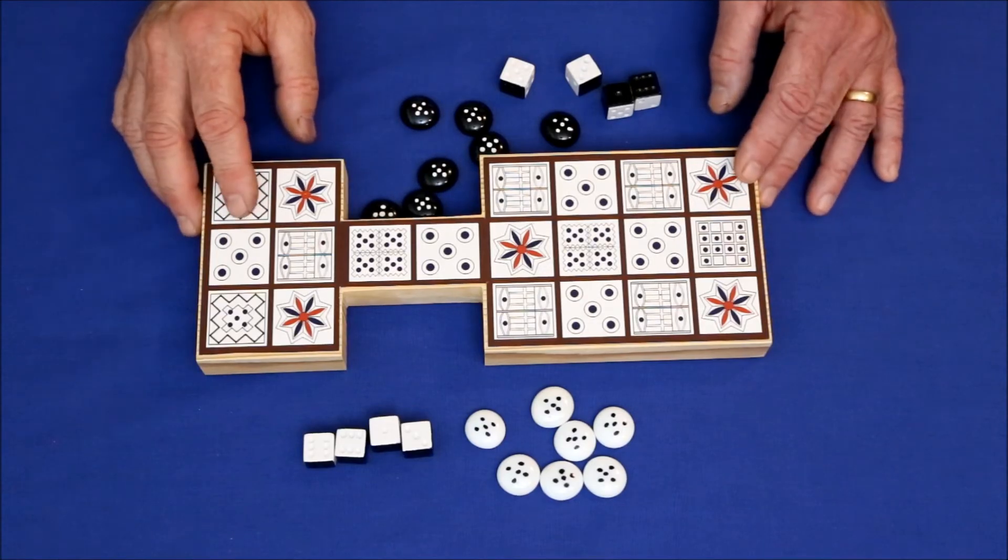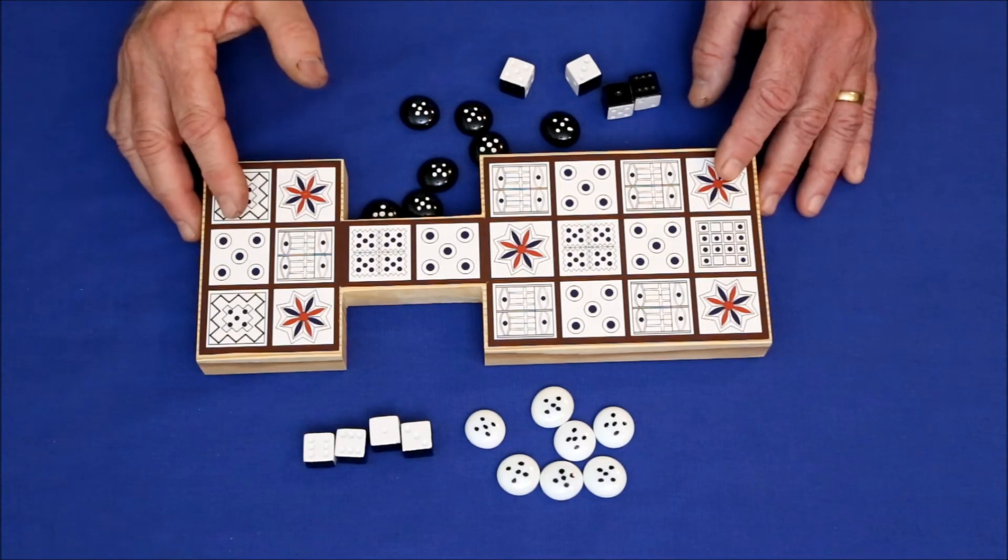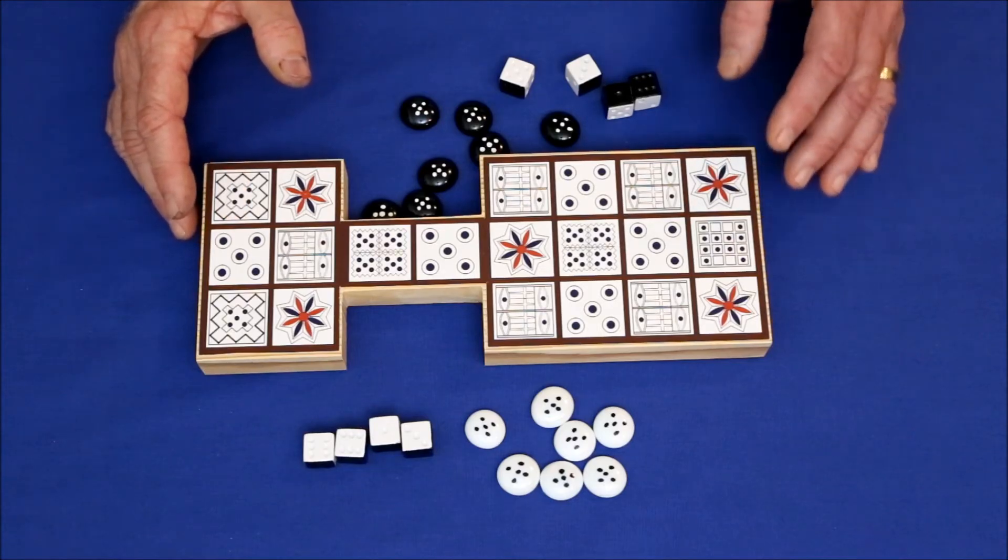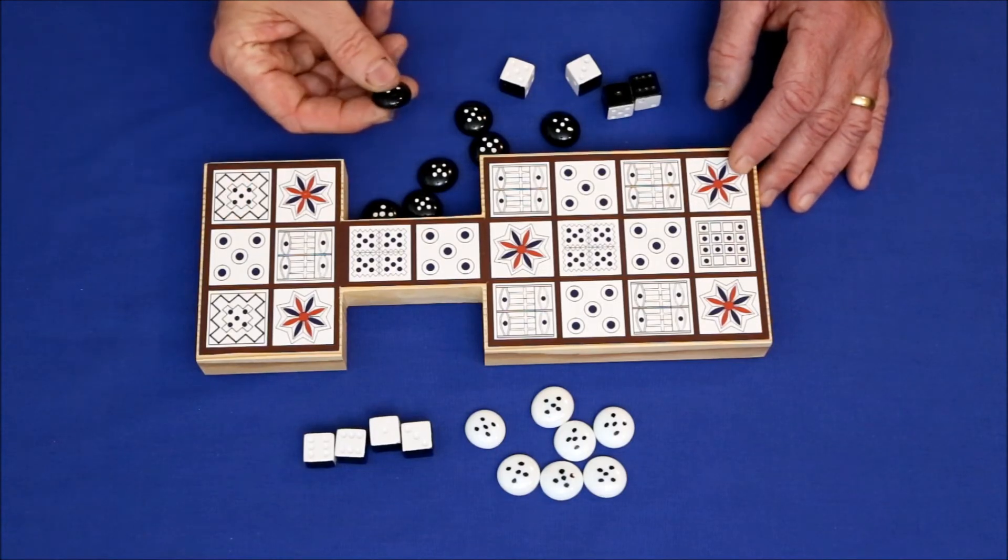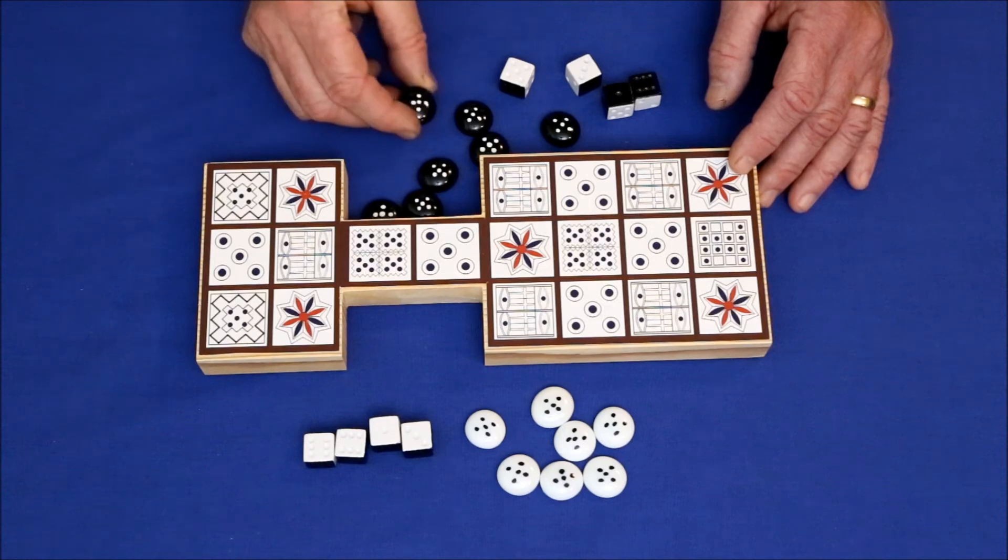The player pieces can be anything from pebbles to buttons, as long as they're different enough so that each player has an identifiable set. I like these cheap craft glass nodules because they're easy to pick up.